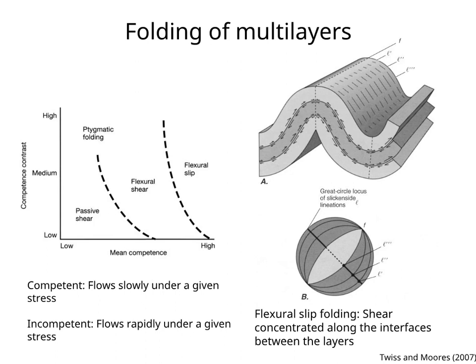Figure B to the right shows bedding planes and the lineations' orientations in a fold produced by flexural slip folding.